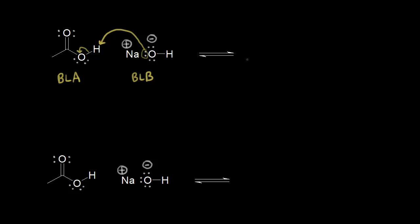So these two electrons are left behind on this oxygen. Let's draw the products of this acid-base reaction. On the left, we would have our carbon double bonded to our oxygen, and now this oxygen would have three lone pairs of electrons around it, which gives this oxygen a negative one formal charge. We'd also have a sodium cation here — an ionic bond. And then what do you get if you add an H+ to OH−? You would get H2O, or water.